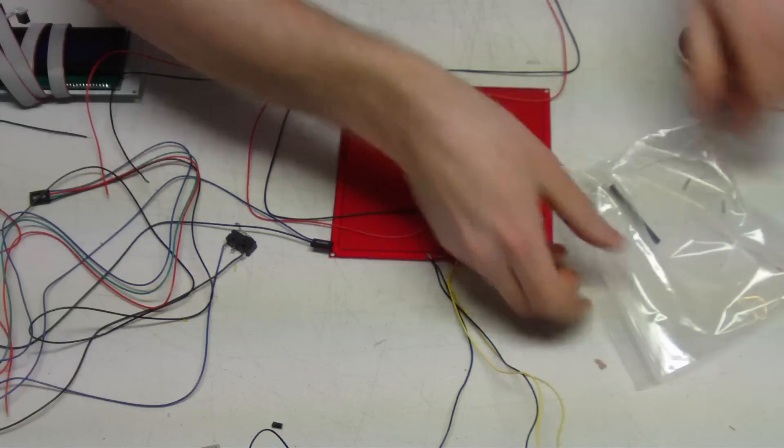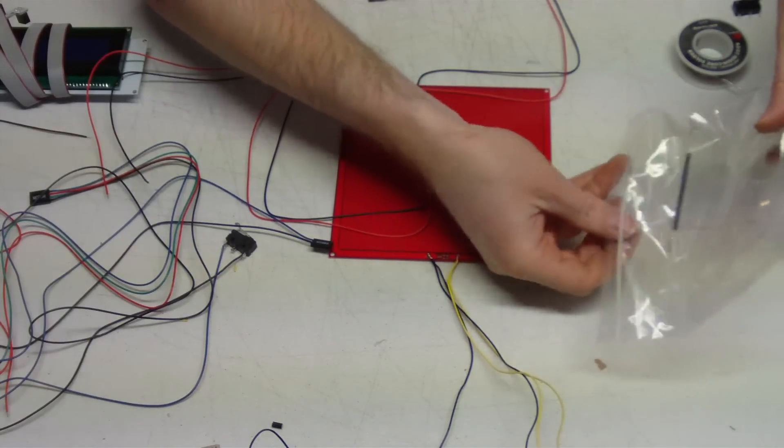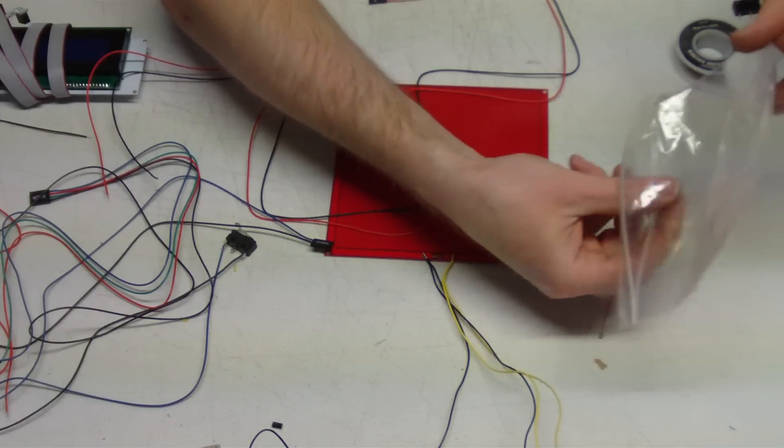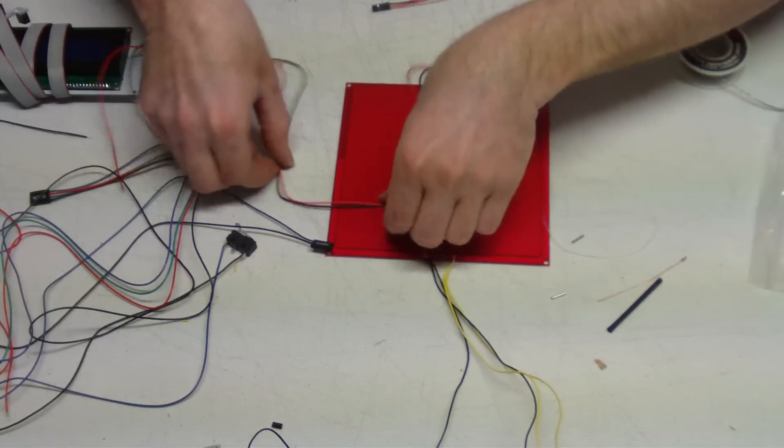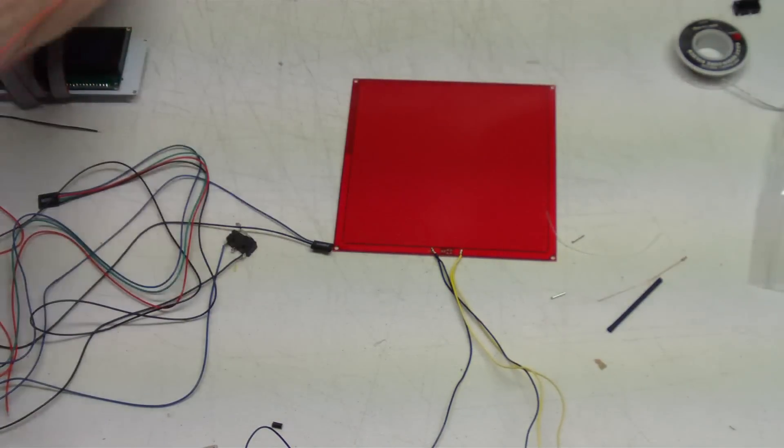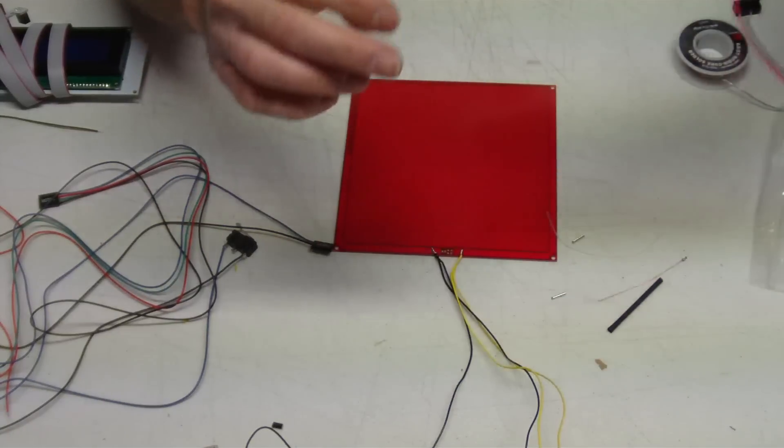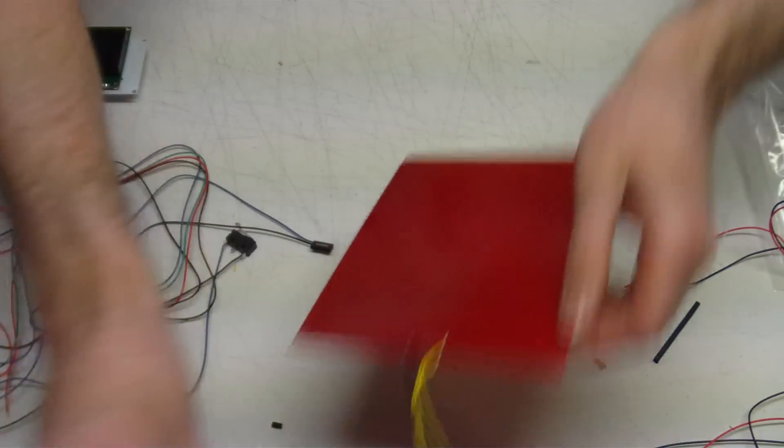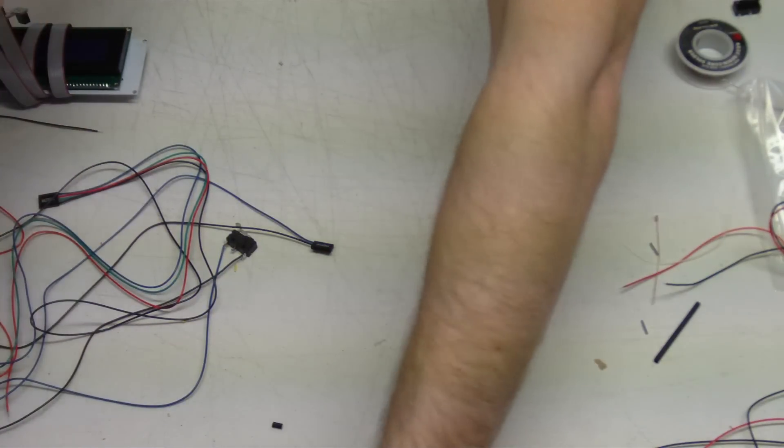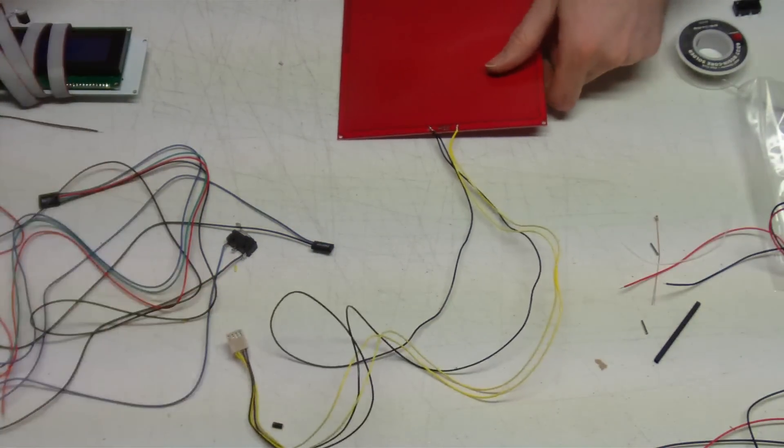So all you would do, you would do the same thing as in the other videos. You would get your thermistor, put your sleeving on it, and then just crimp your thermistor wire to the end of it. The next thing that we're going to do is, I'll show you this real quick.